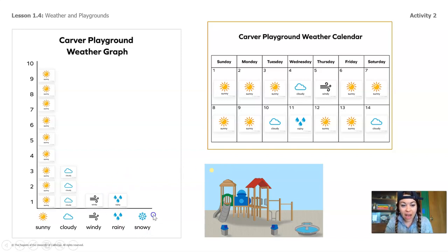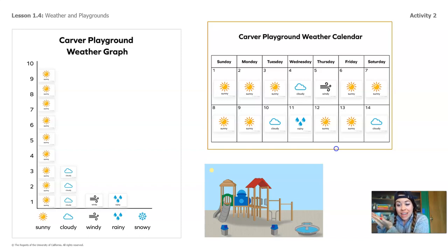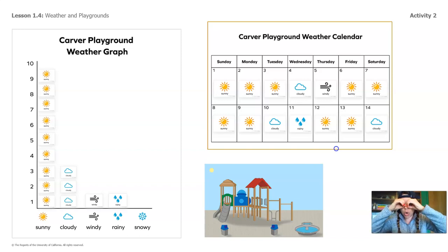The graph also has snowy weather listed. Look at the calendar — do you see any snowy weather pictures? Yeah, no, there's no snowy days. So we're not going to put any snowy days on our graph because there were zero snowy days.